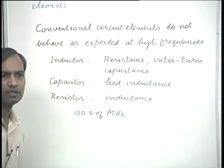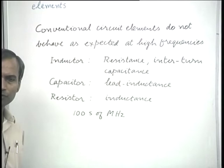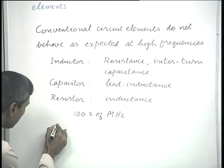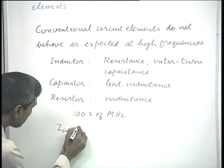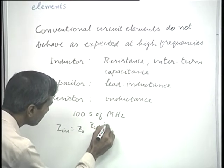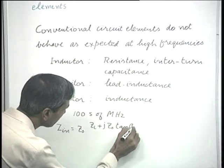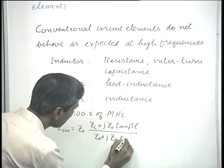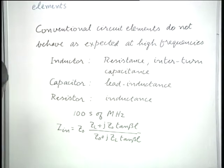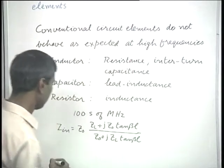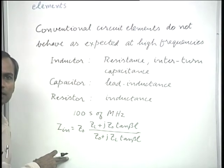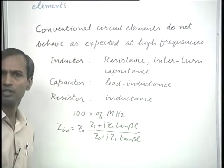The basis for using transmission line sections as circuit elements is the input impedance seen at the terminals of a transmission line with some termination at the other end. The expression, familiar by now, is: z_in = z_0 times (z_L + j z_0 tan(βl)) divided by (z_0 + j z_L tan(βl)), valid under the lossless or low-loss approximation.